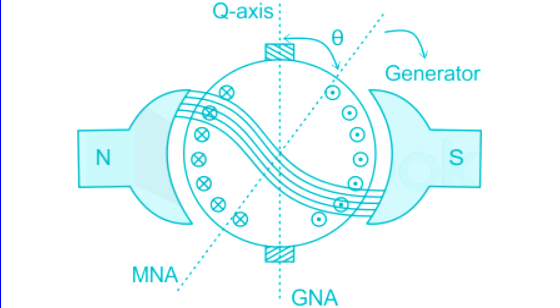This shift results in the armature current flux orienting along the brush axis, thereby causing cross-magnetization of the main field. Such cross-magnetization concentrates flux at the trailing pole tip during generator operation and at the leading pole tip during motor operation.